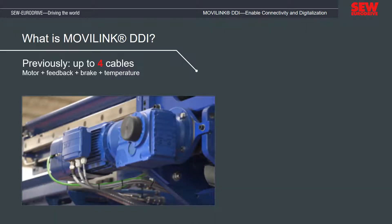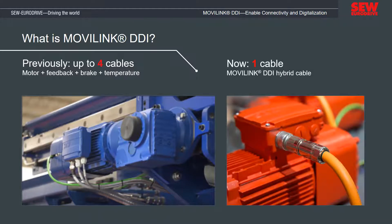Until now, up to four cables were required to enable a flow of energy and information between a motor and a frequency inverter. Today, this can be achieved with just a single cable. Movilink DDI enables single cable technology up to a power cross section of 10 square millimeters.